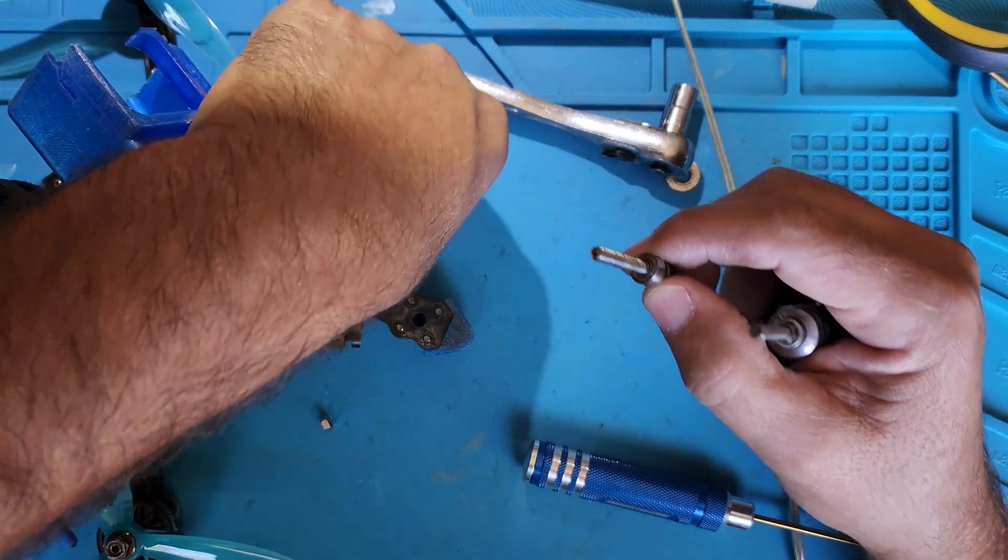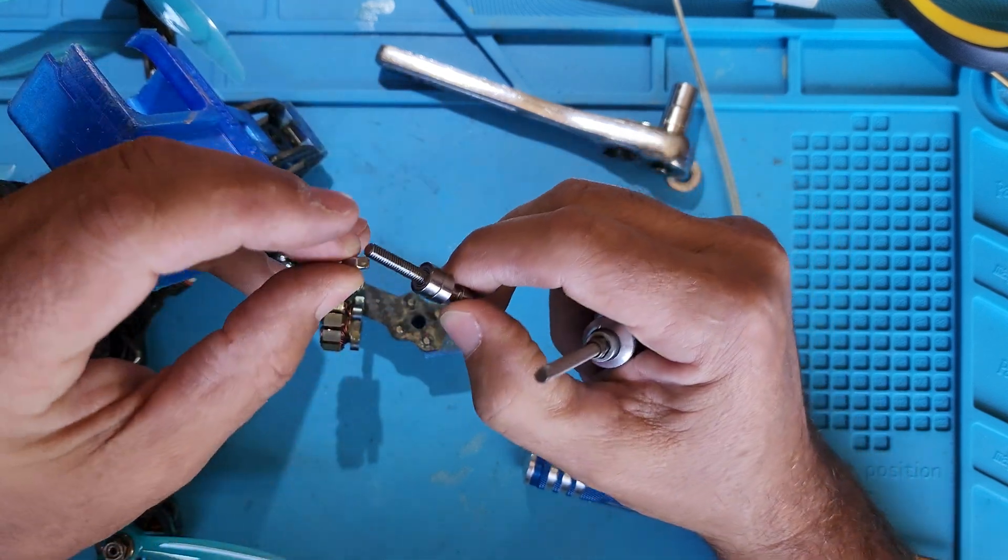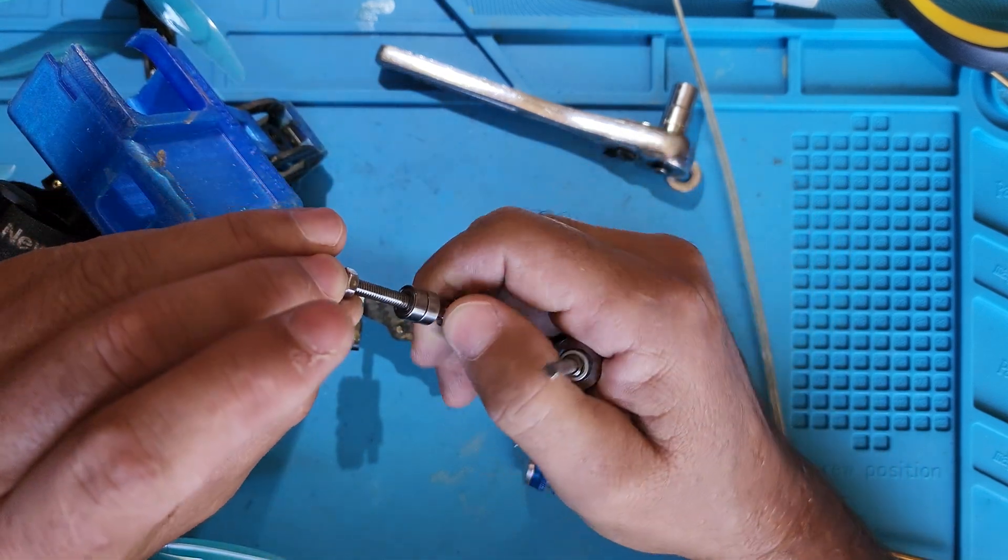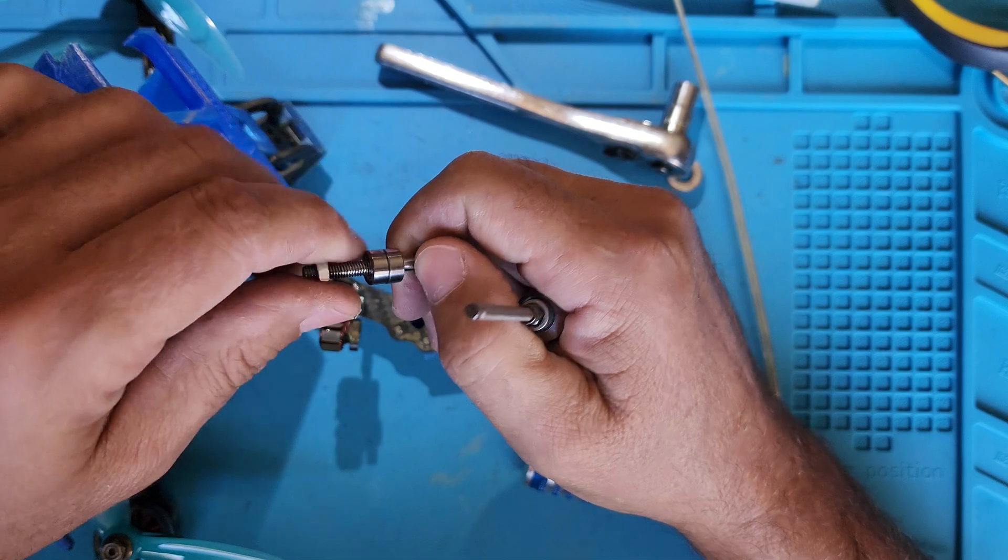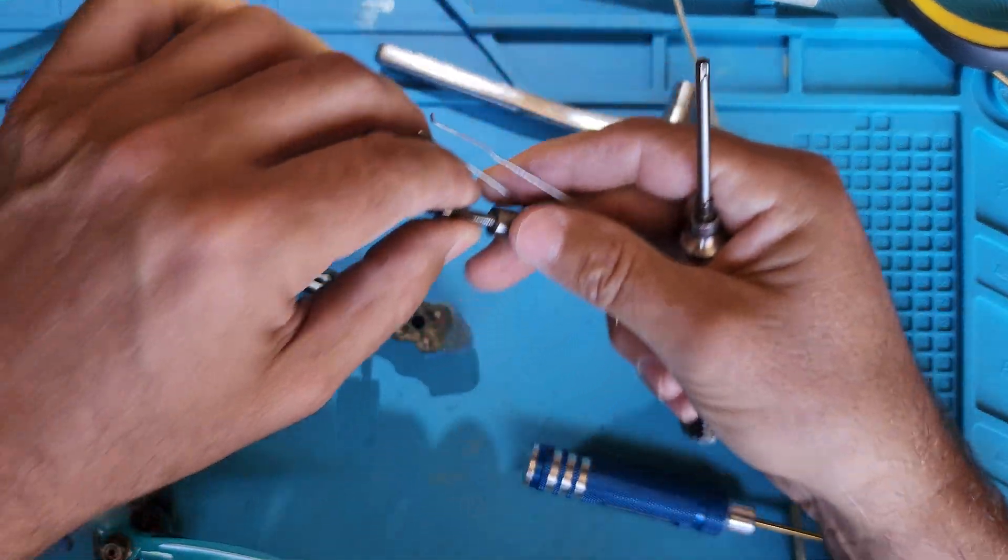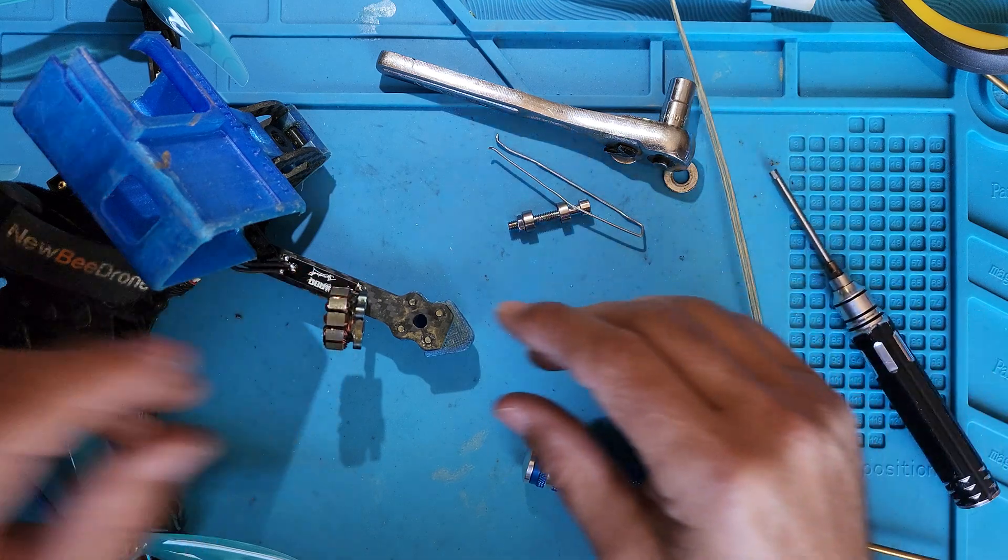And this doesn't require an arbor press or anything like that. You can do it in the field. All you got to do is have an old bolt, some old bearings, a couple little simple tools. It's pretty simple. And then from there, you put your bell back on.